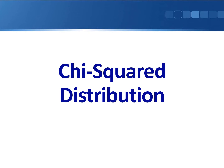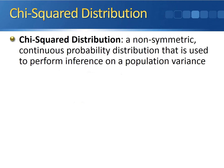This video is going to give you some important information about the chi-squared distribution. The chi-squared distribution is a non-symmetric continuous probability distribution that's used to perform inference on a population variance.